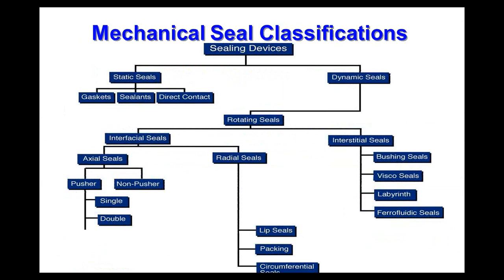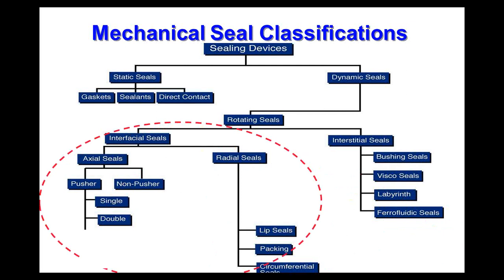Here are some sealing classifications. These are all different types of seals — not just mechanical seals but all types, from gaskets and sealants all the way to mechanical seals. Mechanical seals fall under axial seals, and the categories under axial seals are pusher, non-pusher, single, and double.